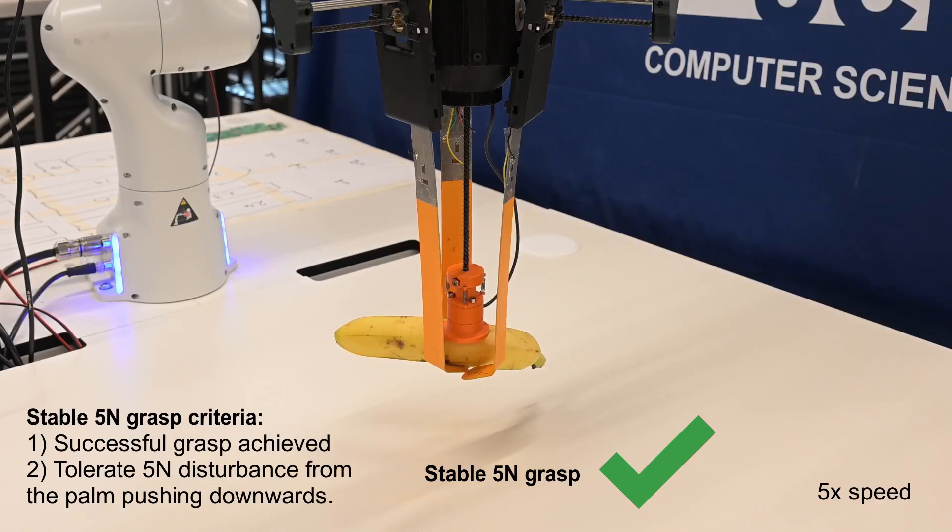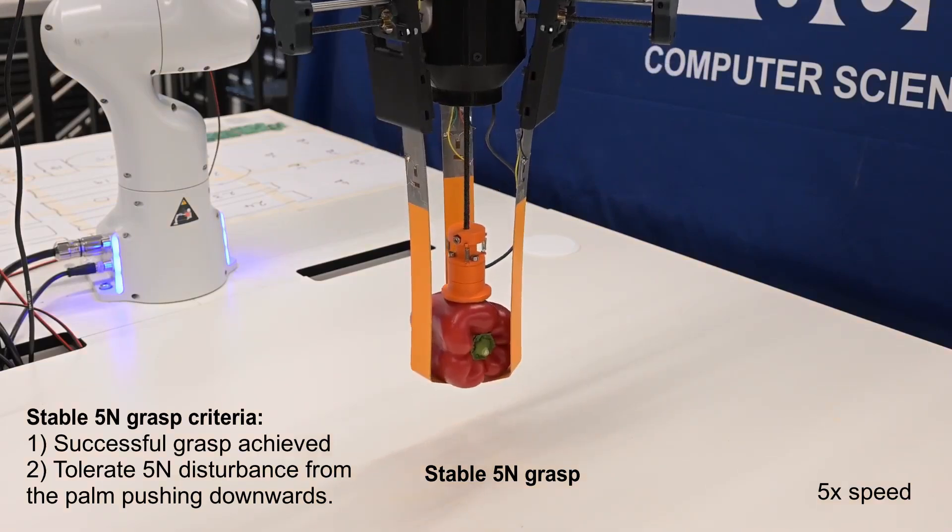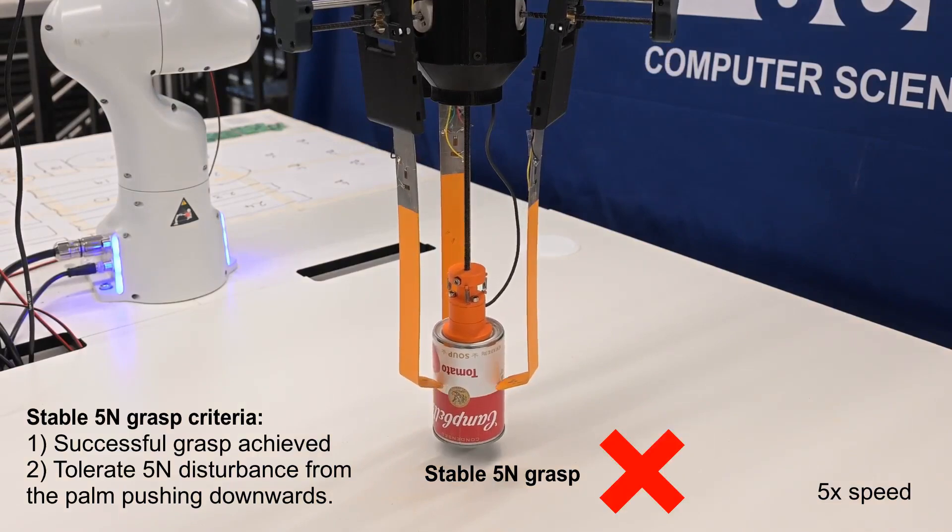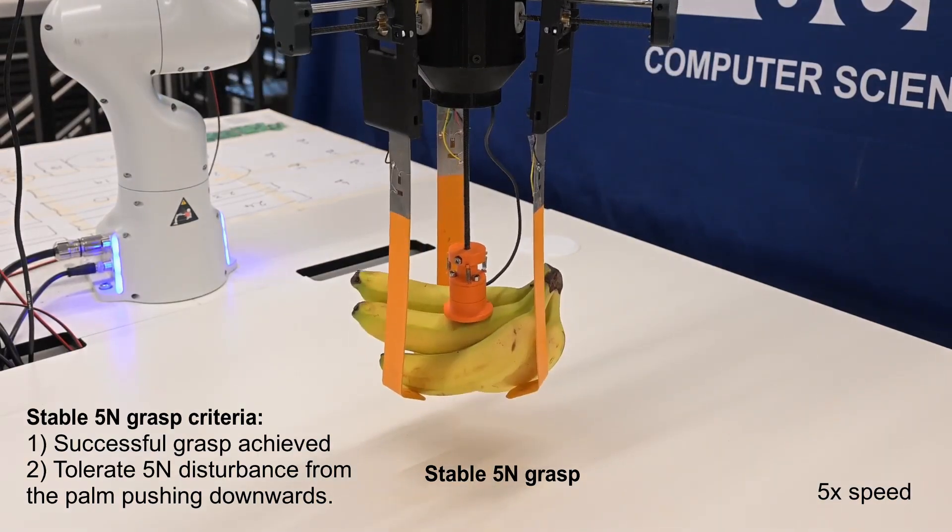These objects pass, resisting 5N whilst remaining in grasp. Here, objects fail to resist 5N and don't qualify as stable 5N grasps.